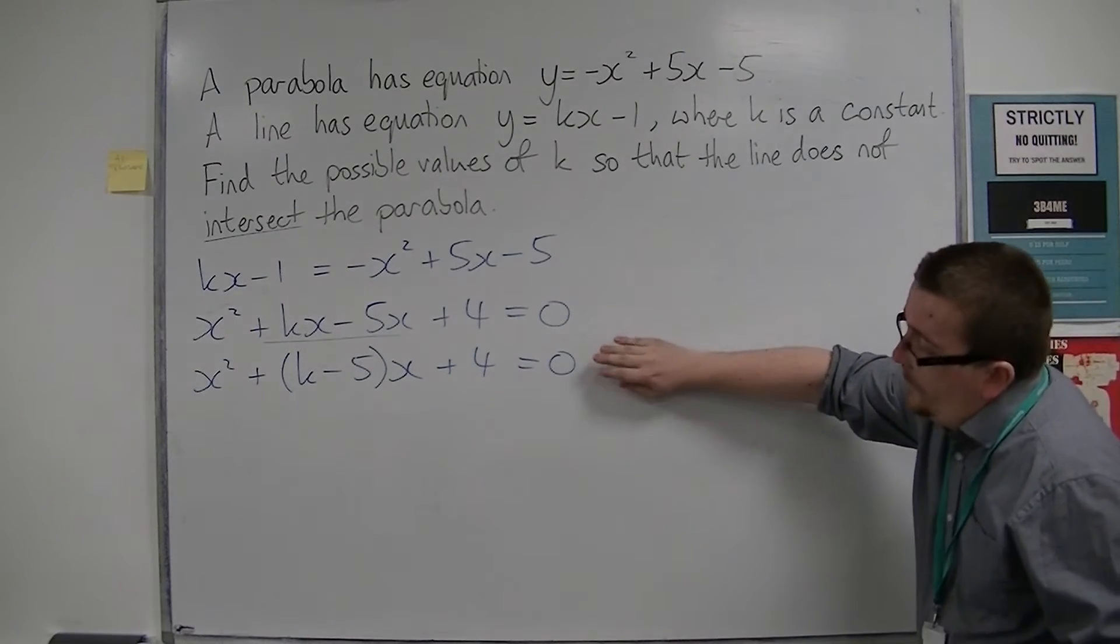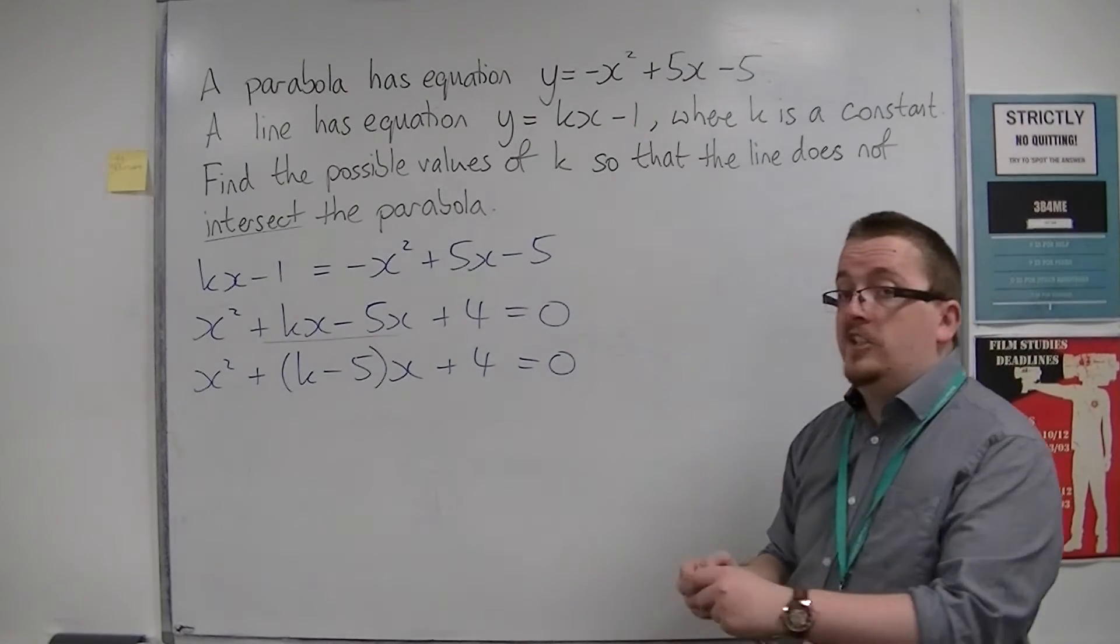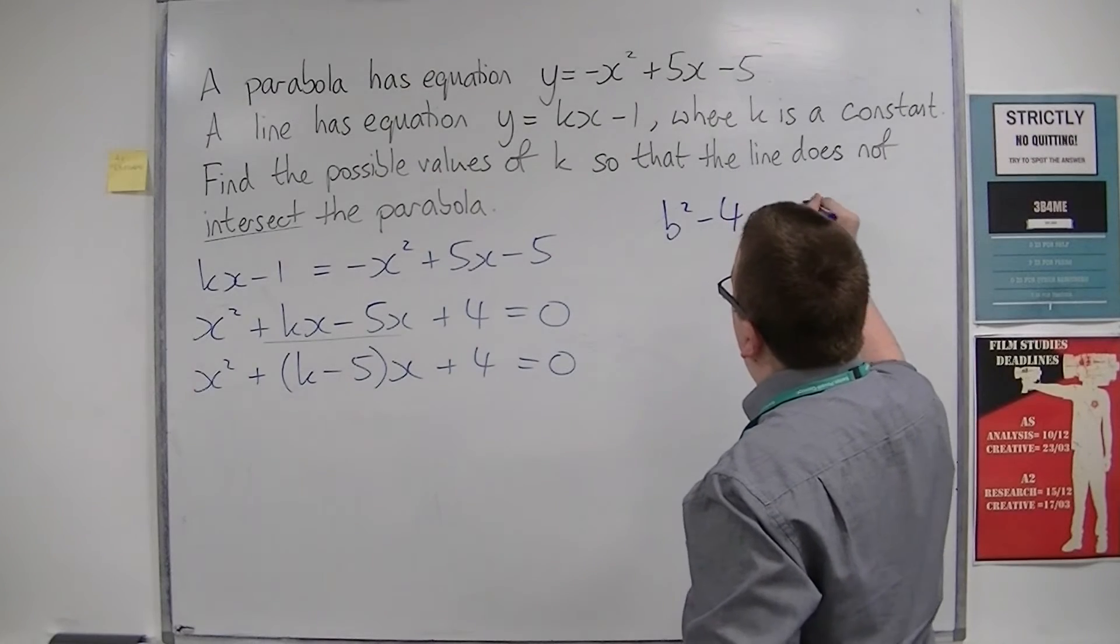So where does this have no real roots? Well, that is going to be when the discriminant, b squared minus 4ac, is negative.